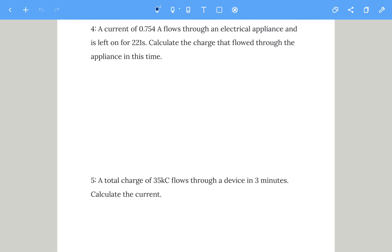Let's pause and have a go at these ones. We've got a current of 0.754 amps left on for 221 seconds. Calculate the charge. Charge is current times time, so 0.754 multiplied by 221 seconds gives us a charge of 166.6 or 167 coulombs.